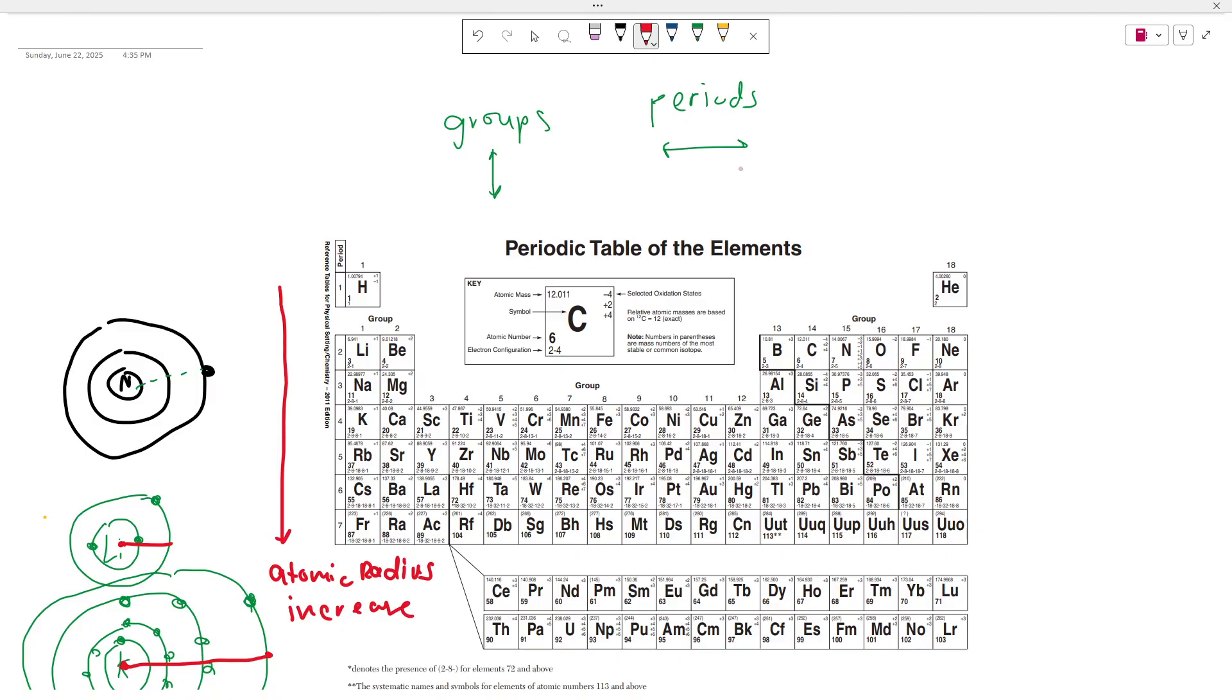So what about as we go across a period, what happens? Well, as we go across a period, the electron configuration doesn't really change, right? If I look at lithium, lithium is still going to have an electron configuration that has two in the first shell and then one in the last shell. But if I look at beryllium, it has the same thing, still has two shells. So how can the atomic radius change if each element here has the same number of shells?